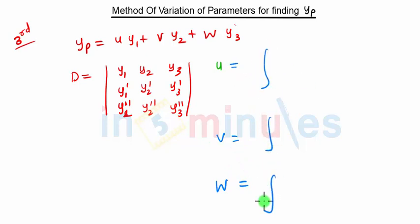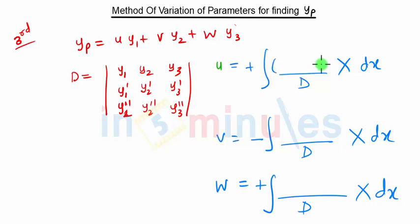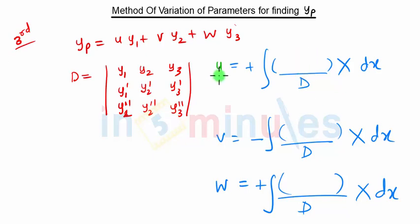After finding the determinant D, we calculate the values of u, v, and w. The formula for all three is similar: u is positive, v is negative, and w is positive, each divided by D and integrated with respect to x. Only the numerator will change. Now let's consider how to write this numerator.